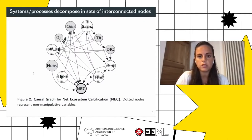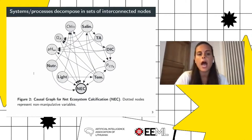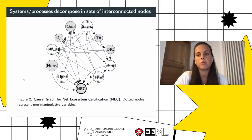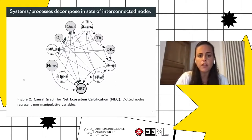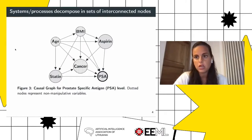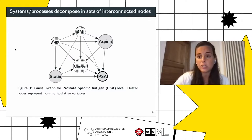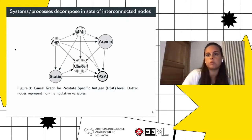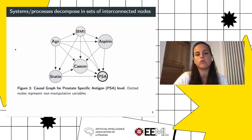This causal graph describes how different variables like population at different times and soil conditions affect crop yield. In this discussion, I'll use dashed edges to represent unobserved confounders, while shaded nodes represent variables that can be intervened on and manipulated. Another example involves different environmental variables affecting the calcification rate for a coral system, where dashed nodes represent non-manipulative variables — variables that can be observed but cannot be intervened on. A further example describes risk factors affecting prostate-specific antigen levels, where age, BMI, and cancer cannot be intervened on, but we can intervene on statin or aspirin drugs a patient can receive.